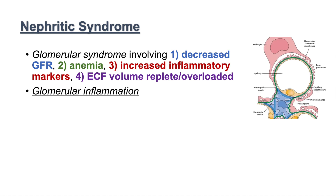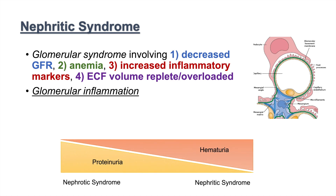Here is just a small picture of a glomerulus. Nephritic syndrome is on a spectrum with nephrotic syndrome. Nephrotic syndrome is when we have more proteinuria — an excess of proteinuria. But with nephritic syndrome, we get less proteinuria but we have more hematuria.